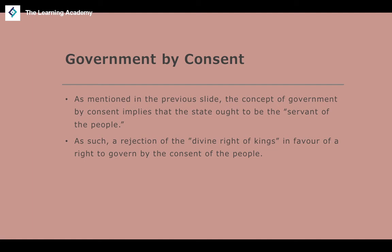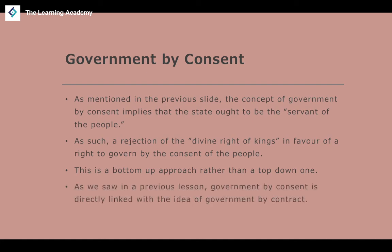Government by consent is directly linked to the idea of government by contract. Individuals who consent to the existence of the state form a contractual relationship with it — the idea of a social contract, developed by Rousseau. They agree to laws and rules which bind them to the state; if we live in and consent to a state, we must follow the rules it prescribes, such as laws against murder and theft.